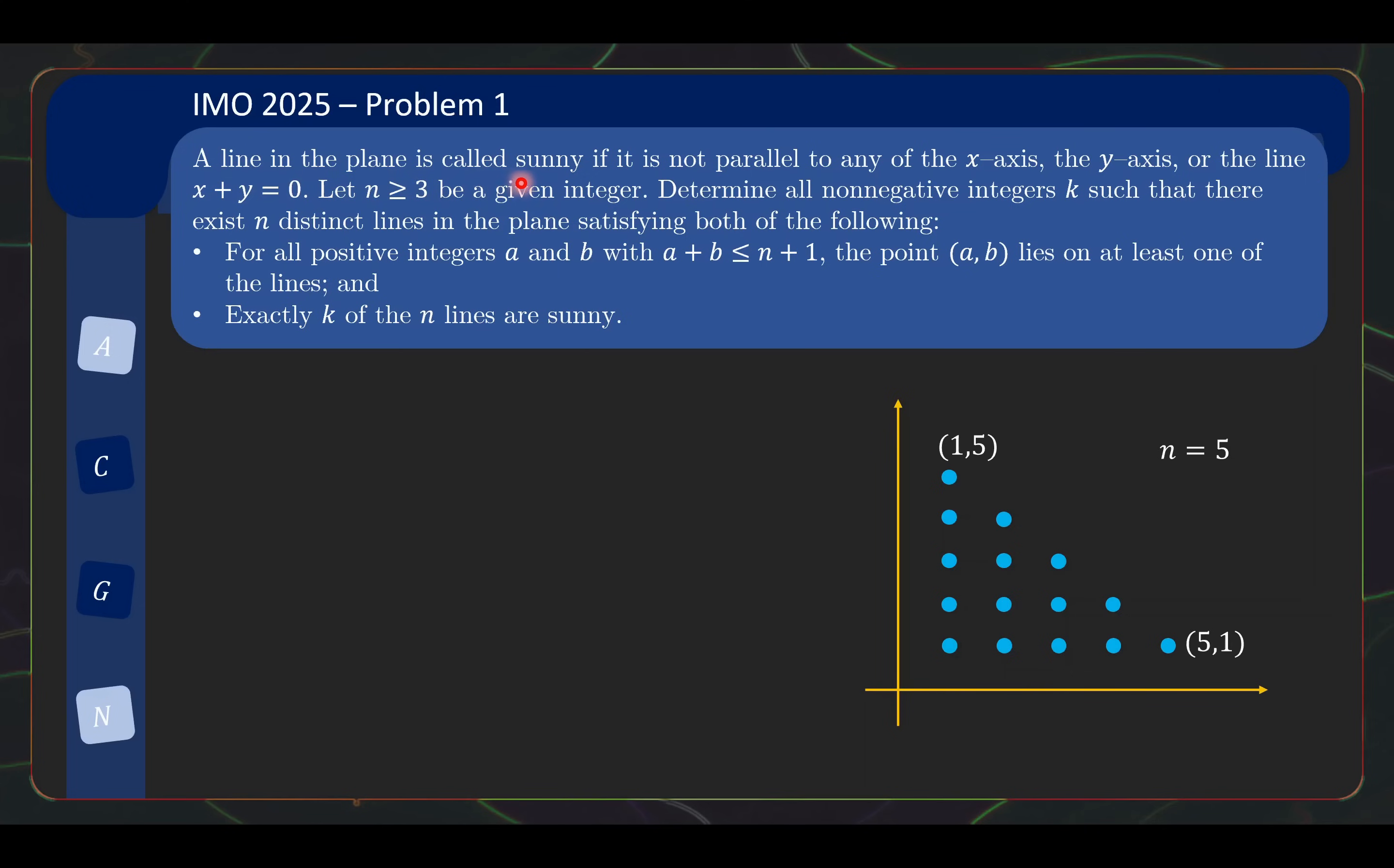A line in the plane is called sunny if it is not parallel to any of the x-axis, the y-axis or the line x plus y equals 0. Let n greater than or equal to 3 be a given integer. Determine all non-negative integers k such that there exist n distinct lines in the plane satisfying both of the following.